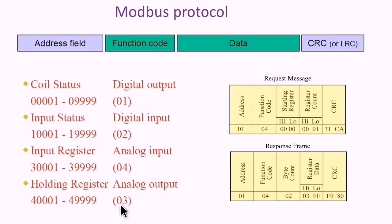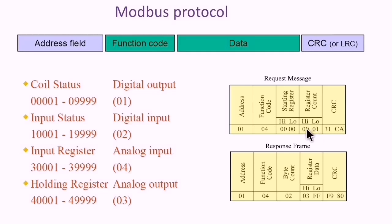Here is an example of an actual Modbus message for reading input registers, which starts with the address, then the function code, then the starting register address to be requested, followed by the register count or number of registers to read, and then the CRC value.